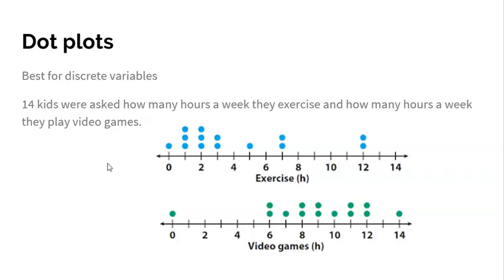The first type of graph we have is called a dot plot. This is best for discrete variables - whole numbers. Really nice. Imagine if we had 14 kids and we asked them, how many hours a week do you exercise and how many hours a week do you play video games? We have two different dot plots here, one for each variable. This is quantitative because the answer they're giving us is a number. This technically could be continuous, but it's discrete in the sense that the kids were giving me a single value. If you ask a kid how many hours, they could be like, oh, I spent 6.25 hours playing video games.